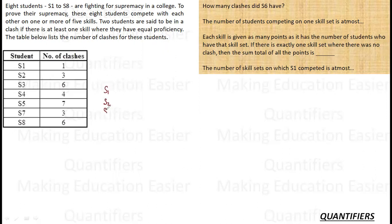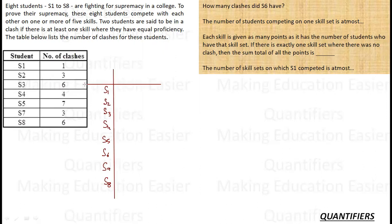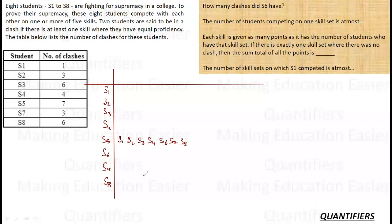So let's order them: S1, S2, S3, S4, S5, S6, S7, and S8 — these are the eight people competing over supremacy at different levels. S5 competes with S1, S2, S3, S4, S6, S7, and S8. Since S1 has only one clash and S5 clashes with everyone, S1's only clash must be with S5.